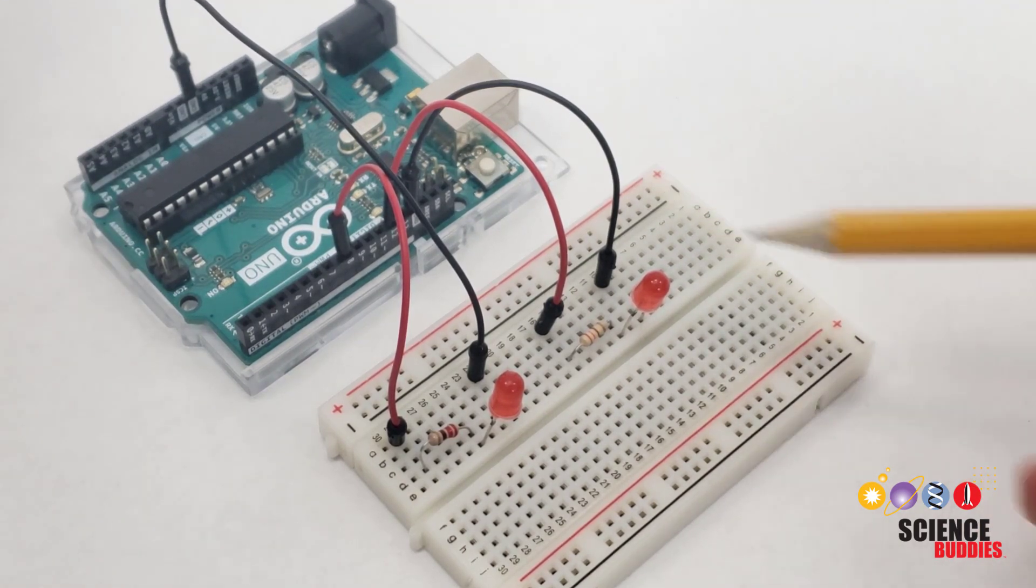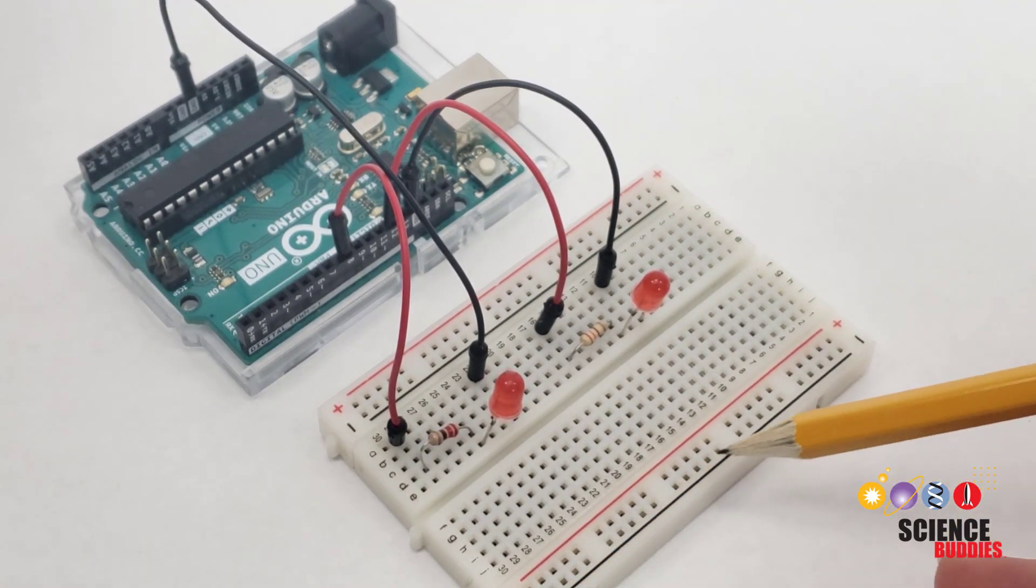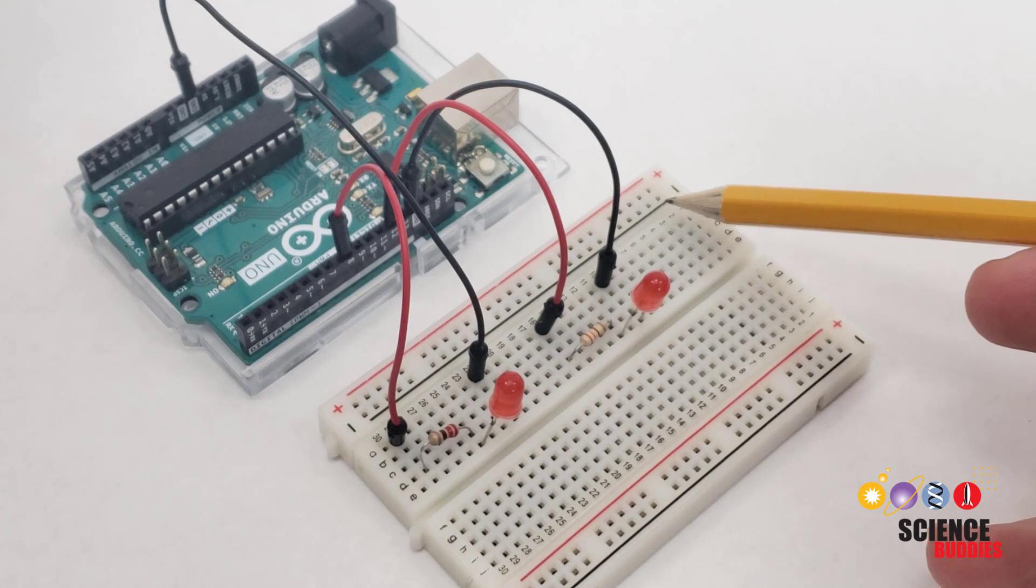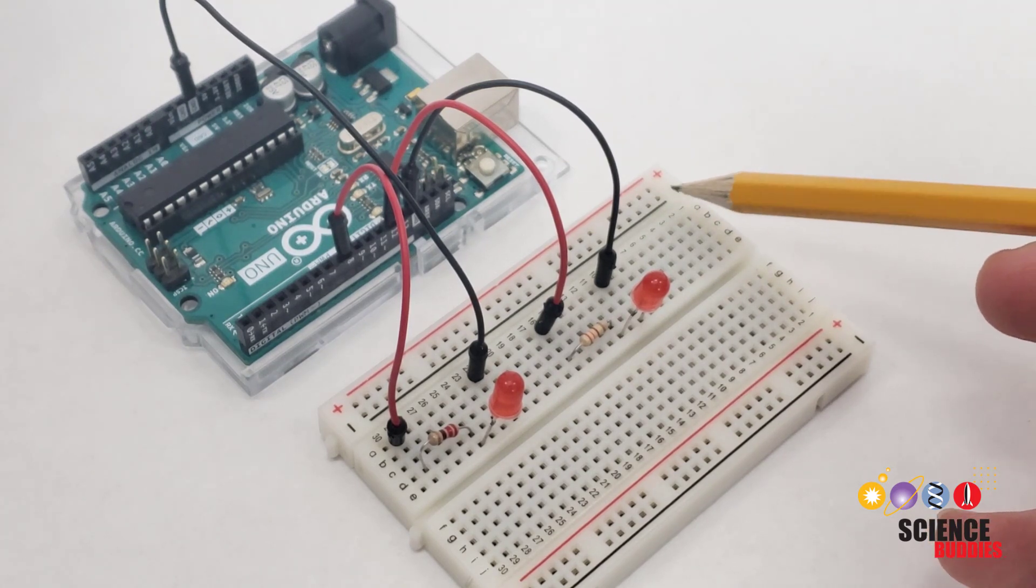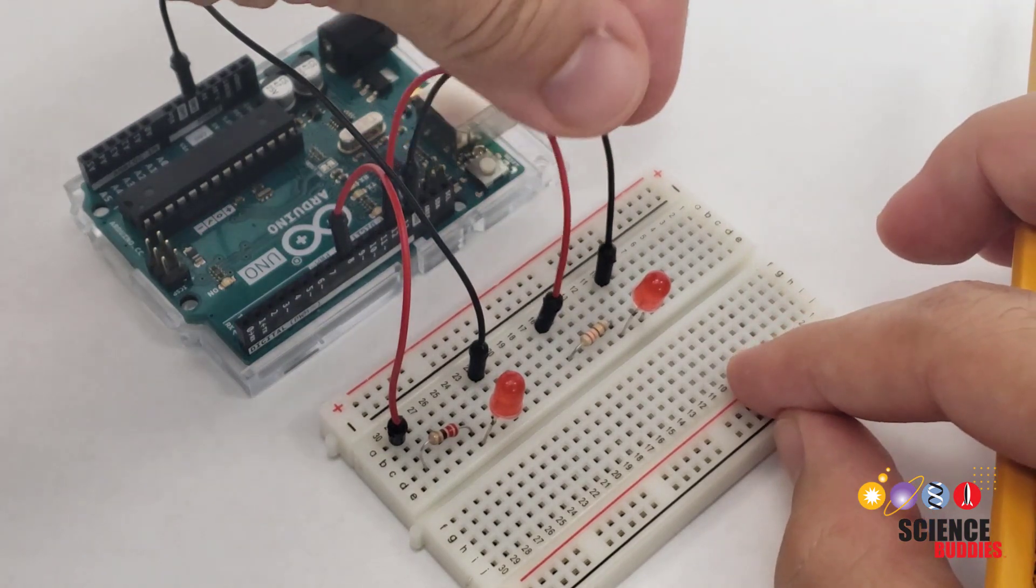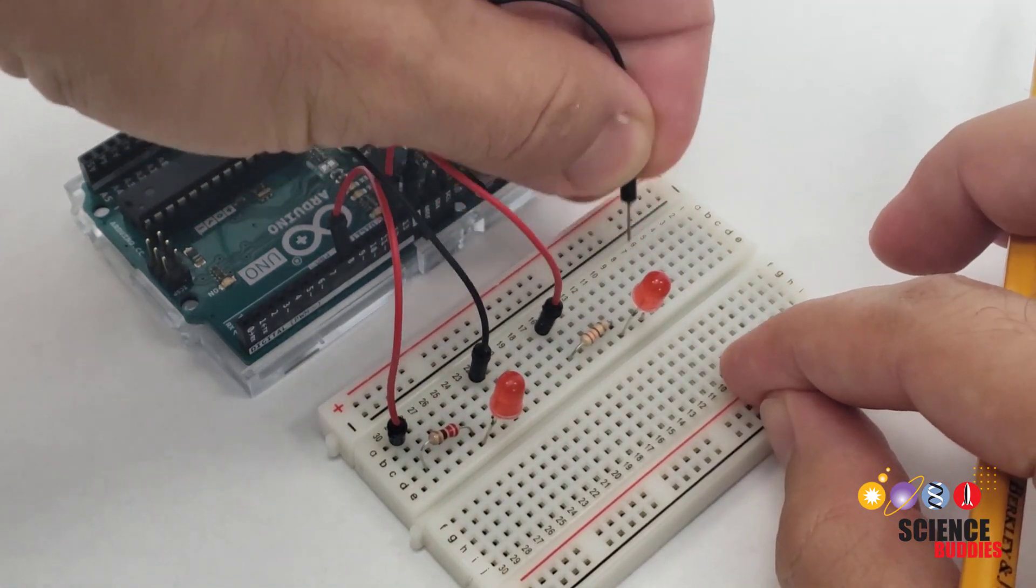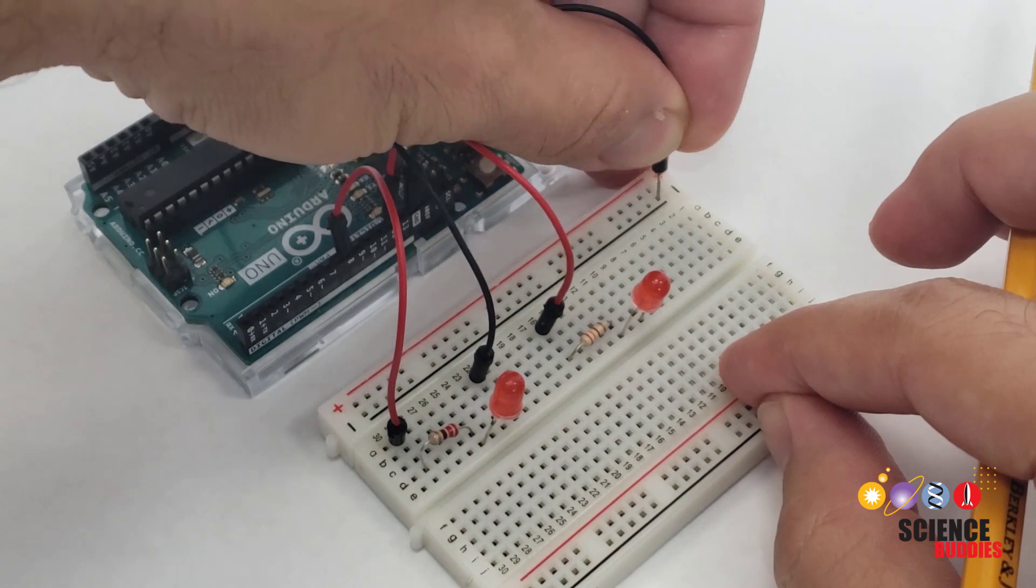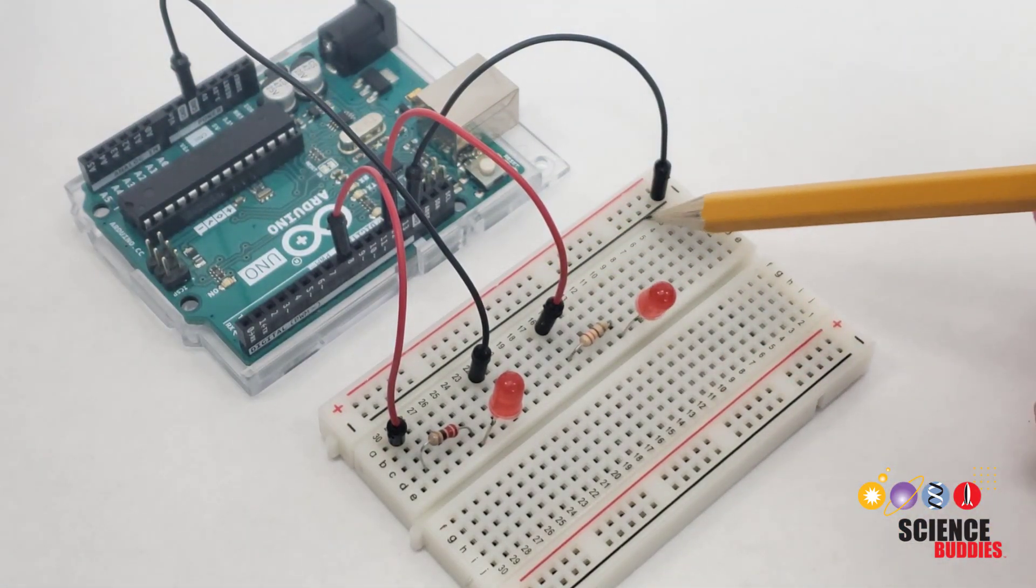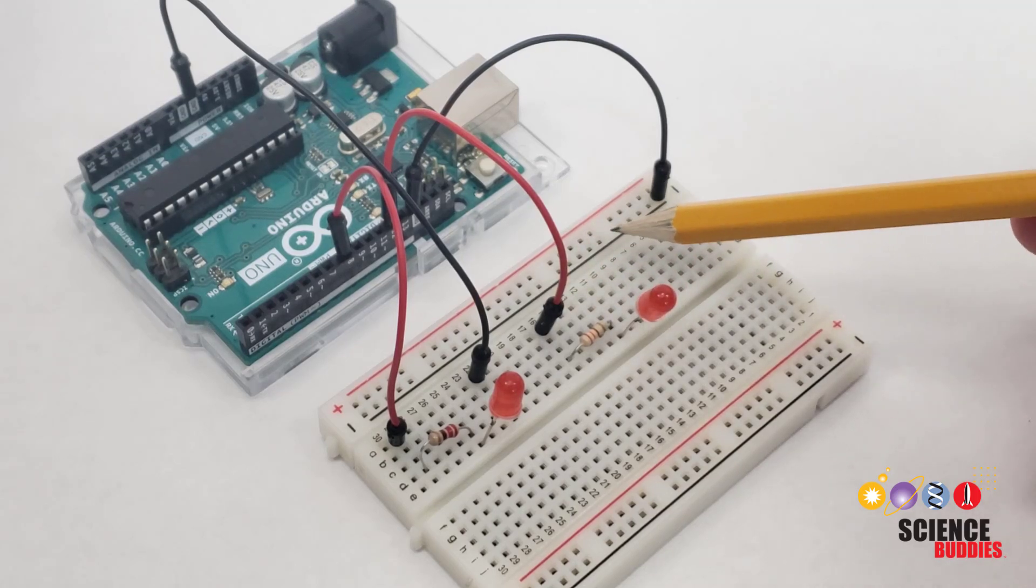A better approach is to use the breadboard's buses, the long strips that are connected up and down the entire length of the breadboard. Normally, you would use the black bus marked with a minus sign for the ground connection. So, what I can do is take one of my ground wires that's connected to the ground pin on the Arduino and plug it in to that bus instead. That is going to make my ground connection available up and down the entire length of the breadboard.